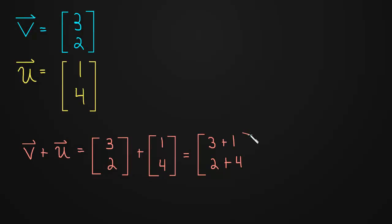And you can see, just visually, what's happening here. The second component of v plus u is just the second component of v plus the second component of u, which in our case becomes 4, 6. So when we add vectors together, we get a new vector. And here we got the vector 4, 6.